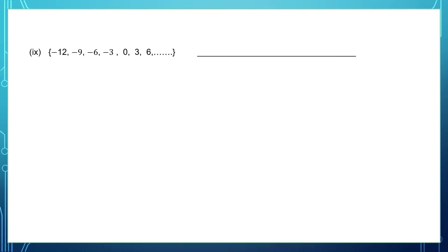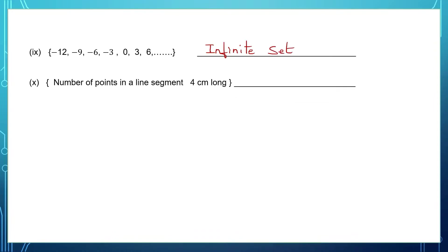Question 9: we have the beginning number minus 12, but let's see if we have the last number. After 6, we have many dots saying we don't have the last number — it can go on endlessly. So this is also an infinite set. Question 10: number of points in a line segment 4 cm long. The number of points in a line segment cannot be counted. So that is an infinite set.